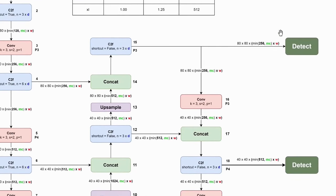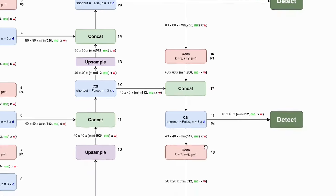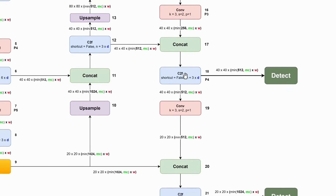There is another C2F block that reduces the channel size of the feature map. Its feature map will be used as input for the detect block specialized for detecting small objects. The output of this block is also used as input to a convolutional block with kernel size 3, stride 2, and padding 1, which reduces the feature map resolution by half. Concat will then combine the feature map from this convolutional block with the feature map from the next C2F block. The following C2F block reduces channel size and feeds into the detect block specialized for detecting medium-sized objects.